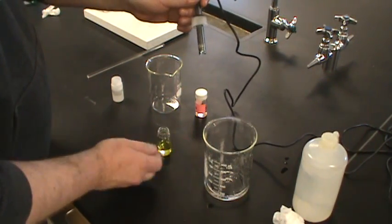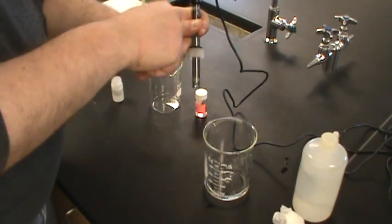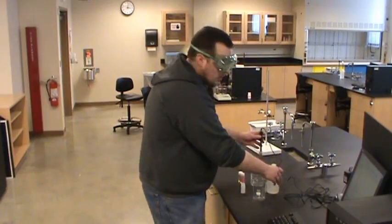So, now, our pH probe is ready to take measurements on other solutions. So, now we've got our probe calibrated. All we have to do is put it in whatever solution we want to measure the pH of. And we should be able to read that pH on the screen.